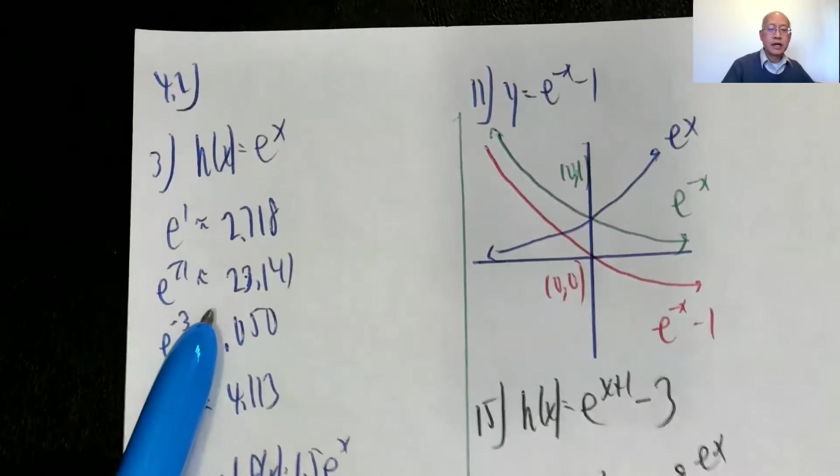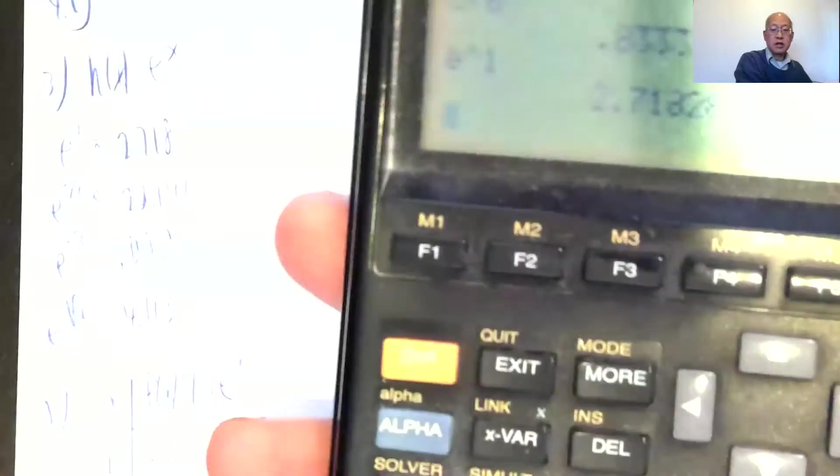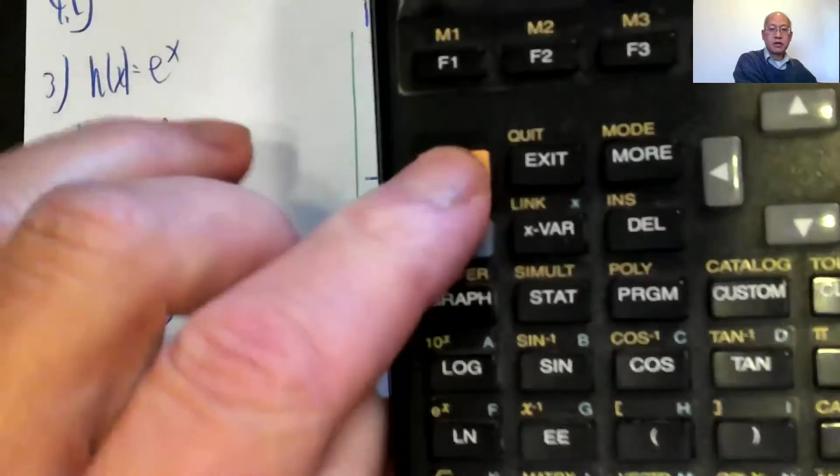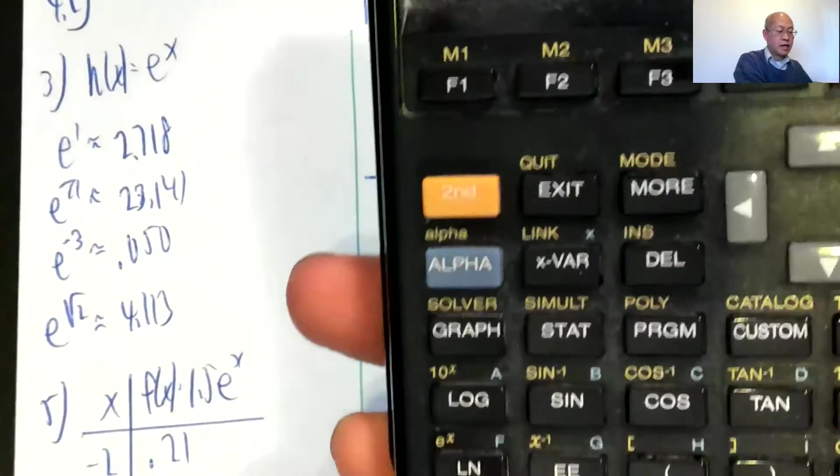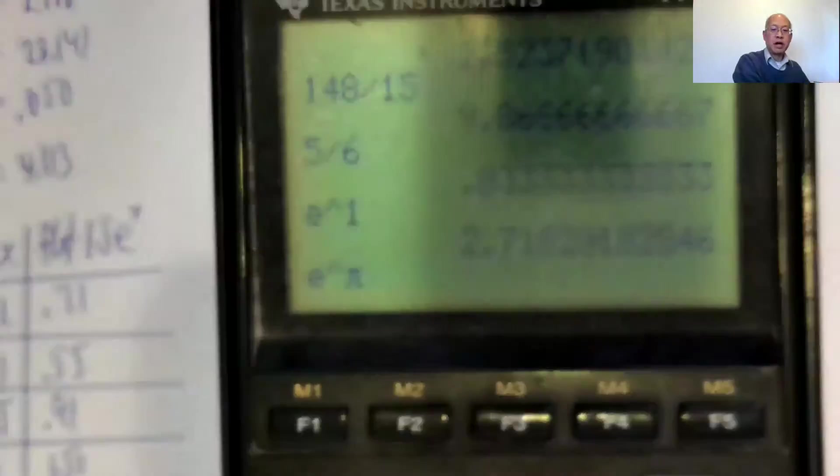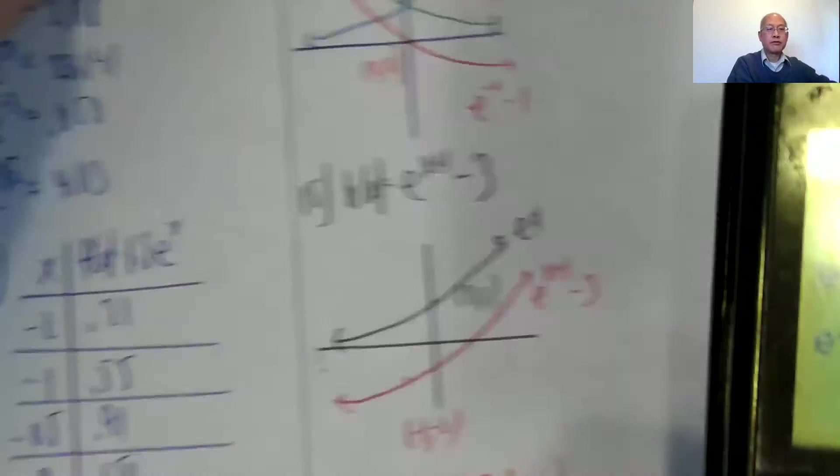e to the pi, it's about 23.141. Okay, so on my calculator, again, e to the x is normally the second function right up here. Okay, so hit second function, and then e to the x, and let's see, I want e to the pi, so hit my pi button, get this thing in focus here, 23.141, roughly.